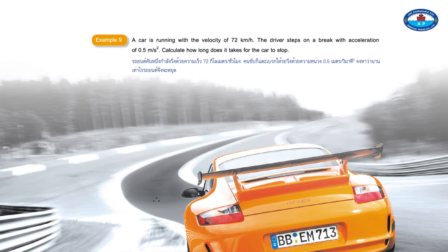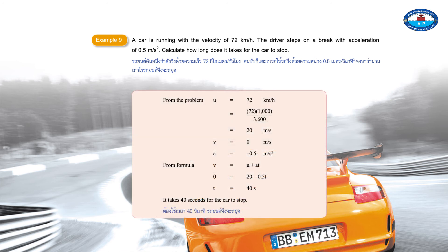Example 9: A car is moving with a velocity of 72 kilometers per hour. The driver steps on the brake with a deceleration of 0.5 meters per second squared. Calculate how long it takes for the car to stop. It takes 40 seconds for the car to stop.